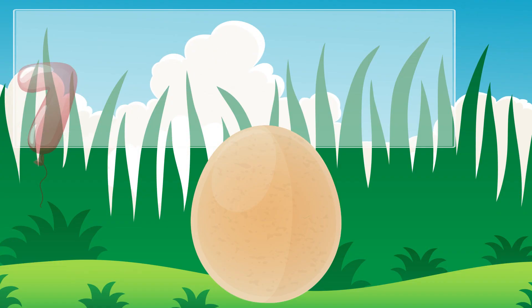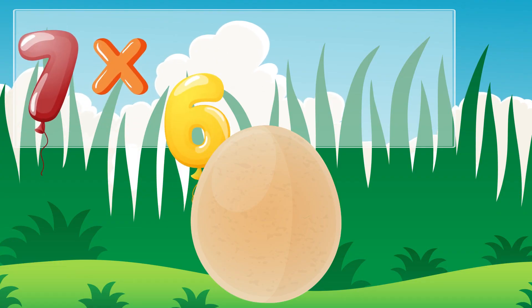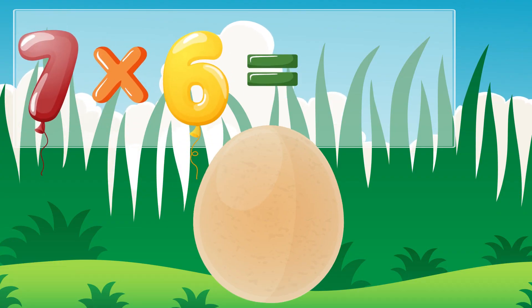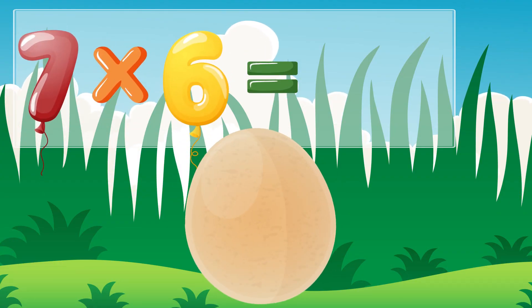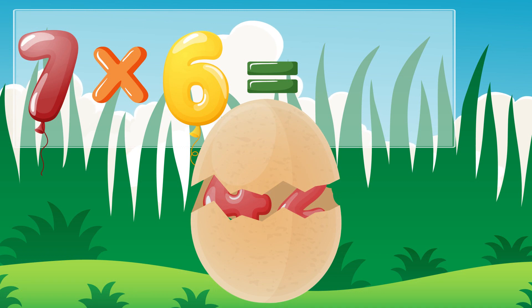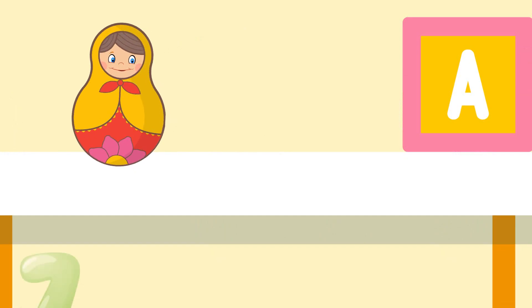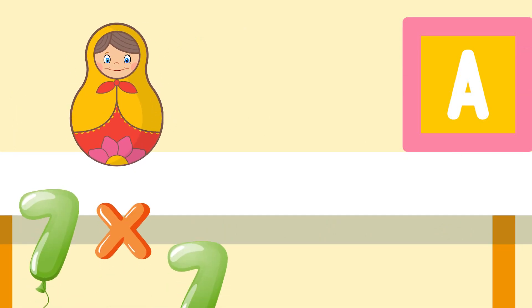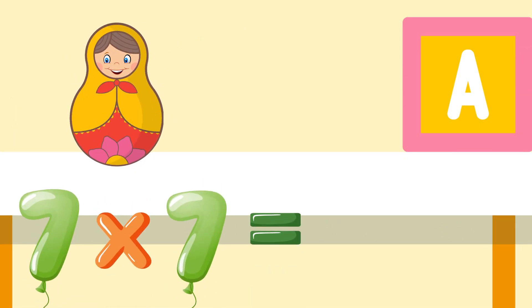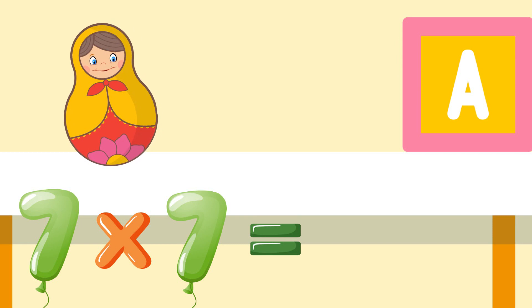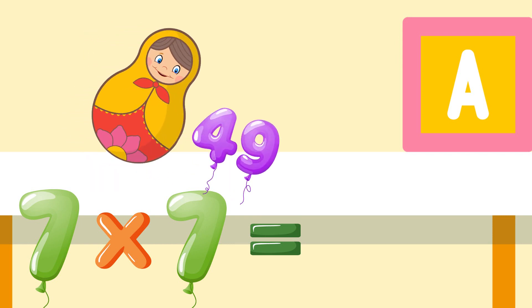Seven times six is forty-two. Seven times seven is forty-nine.